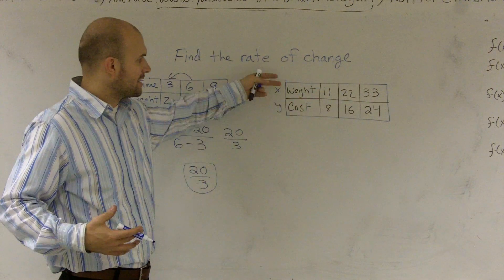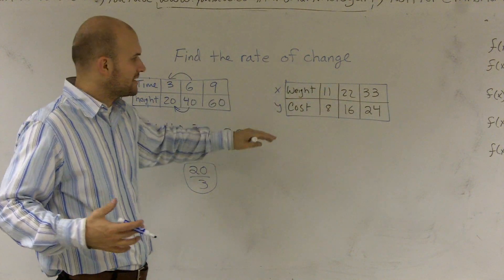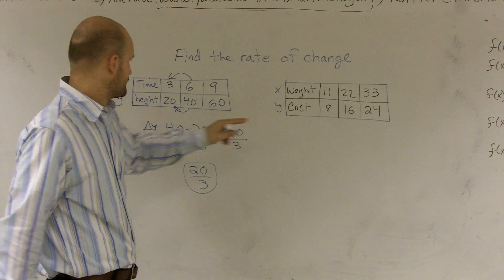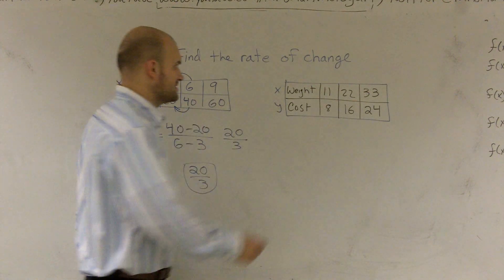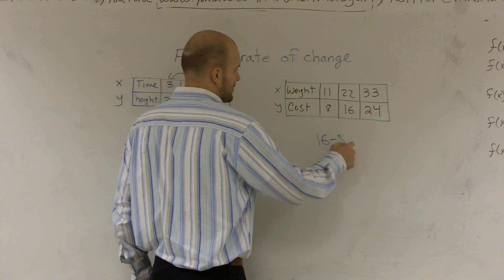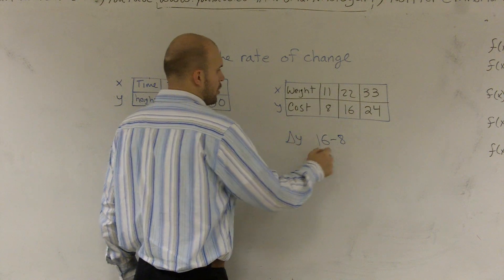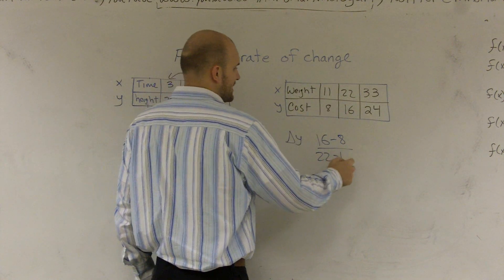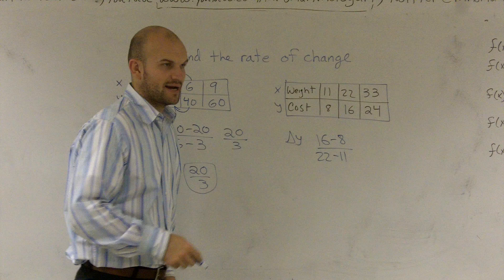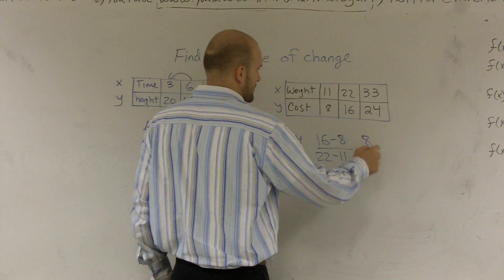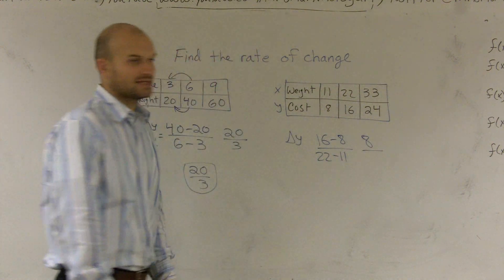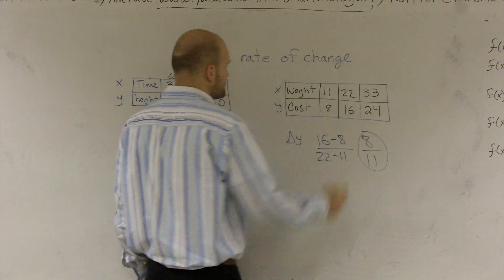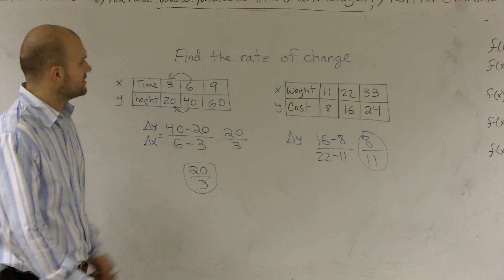For the second example, the rate of change — I'm going to do the exact same thing. I'm going to find the change in my y, which would be 16 minus 8, over the change in my x, which would be 22 minus 11. So 16 minus 8 gives me 8, and 22 minus 11 gives me 11. So the rate of change for this problem would be 8 over 11.